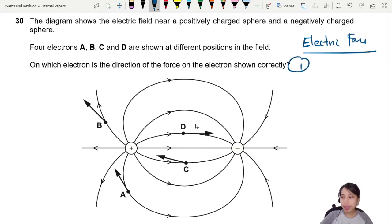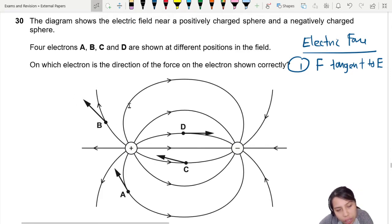Number one, your force should be tangent to your electric field line. So you look through all of it, is it tangent or not? Let's look at this one here, B. This B is not tangent. So not tangent.